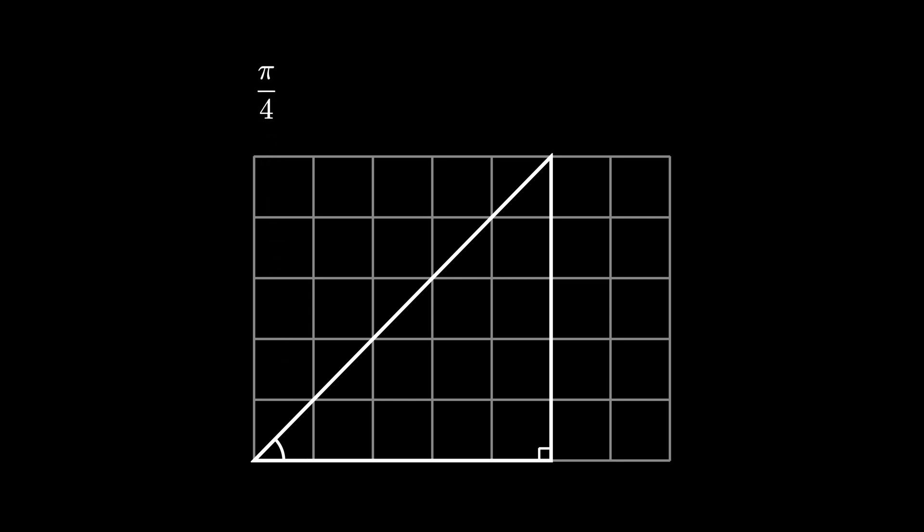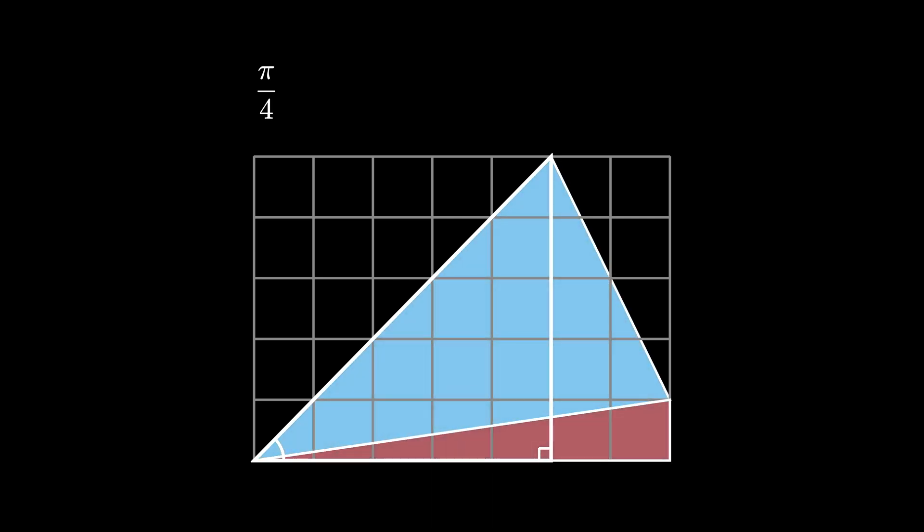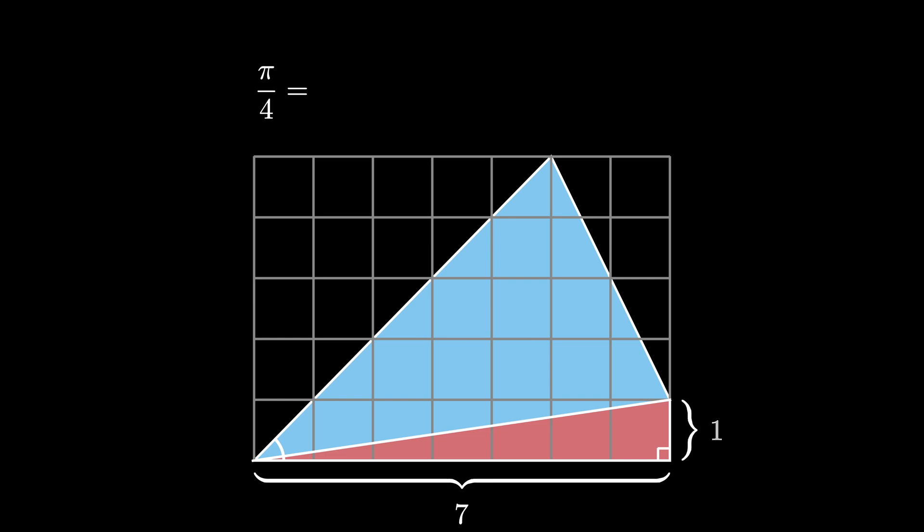We can cut this angle into two separate angles using these two triangles, a blue one on top and the red one on the bottom. The lower red shaded triangle is a right angled triangle, and the legs have lengths 7 and 1 respectively. Therefore, the small angle in the lower left of the red triangle has a measurement of arctangent of 1 over 7.